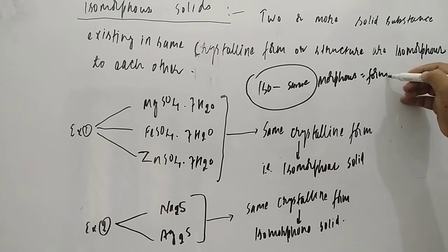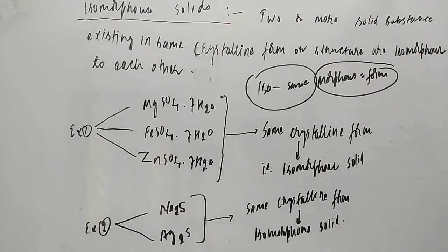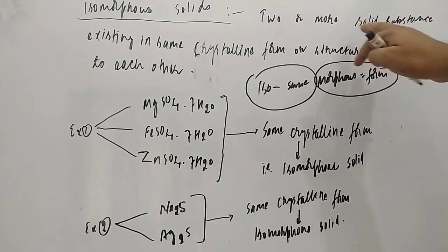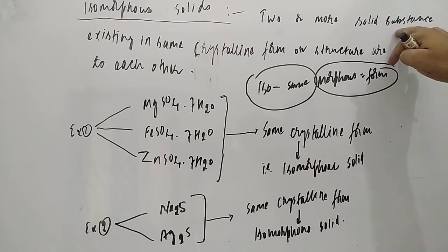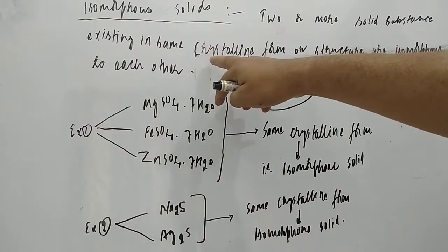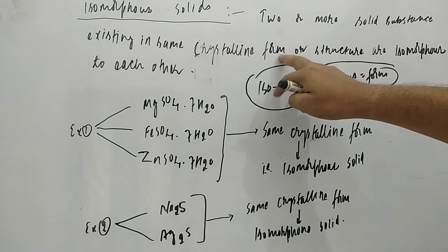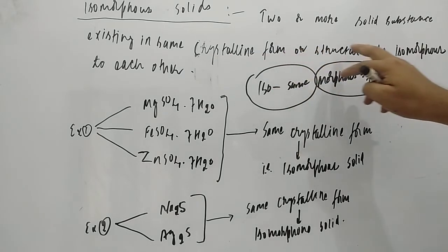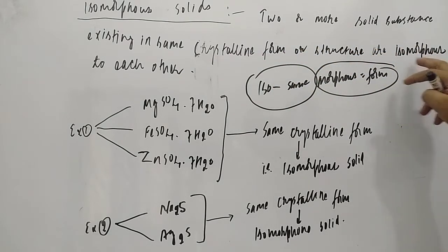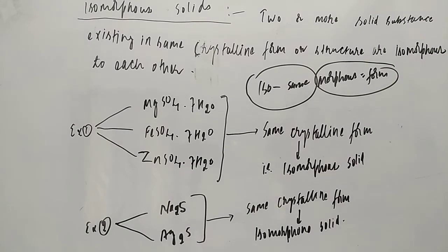So, isomorphous solids are two or more solid substances existing in the same crystalline form or structure. The meaning is that if two or more than two ionic solids exist in the same crystalline structure or same form, that is what is known as isomorphous solids.